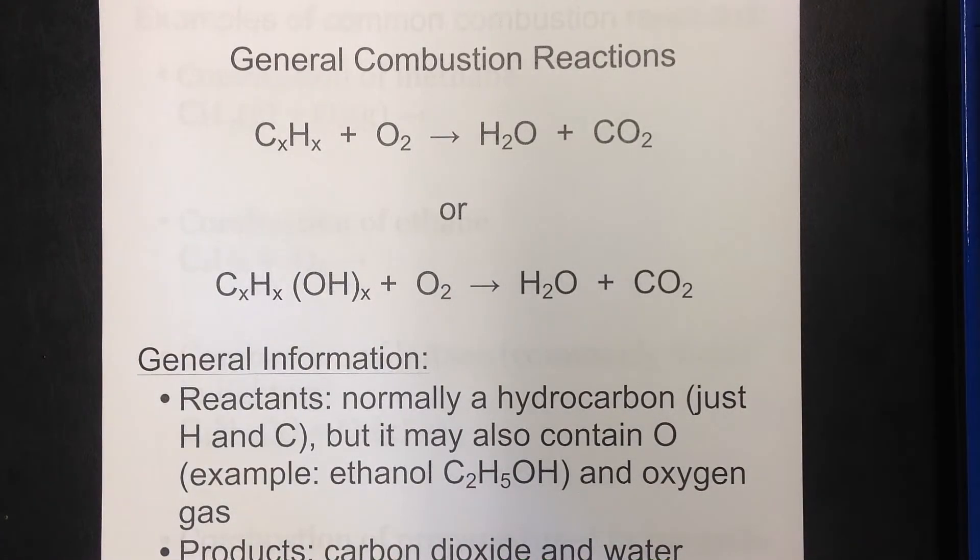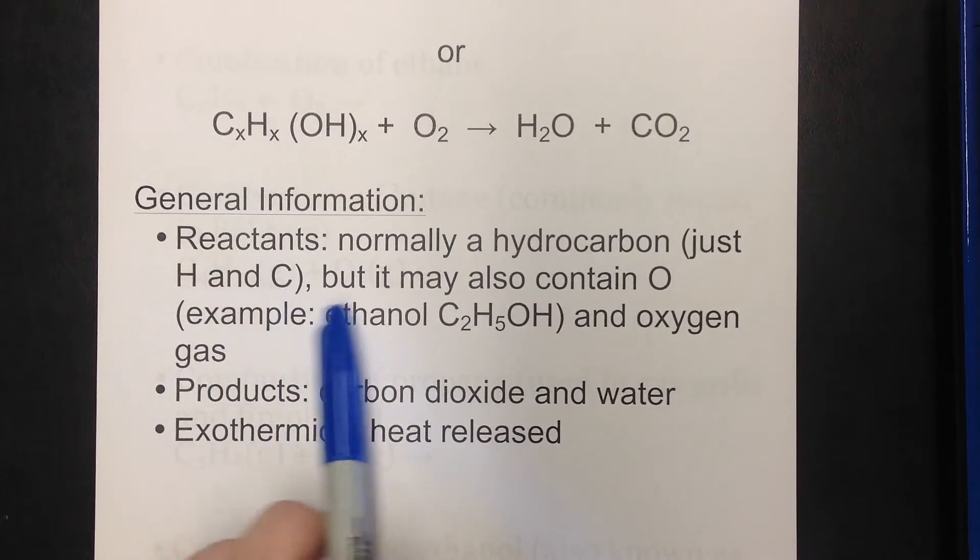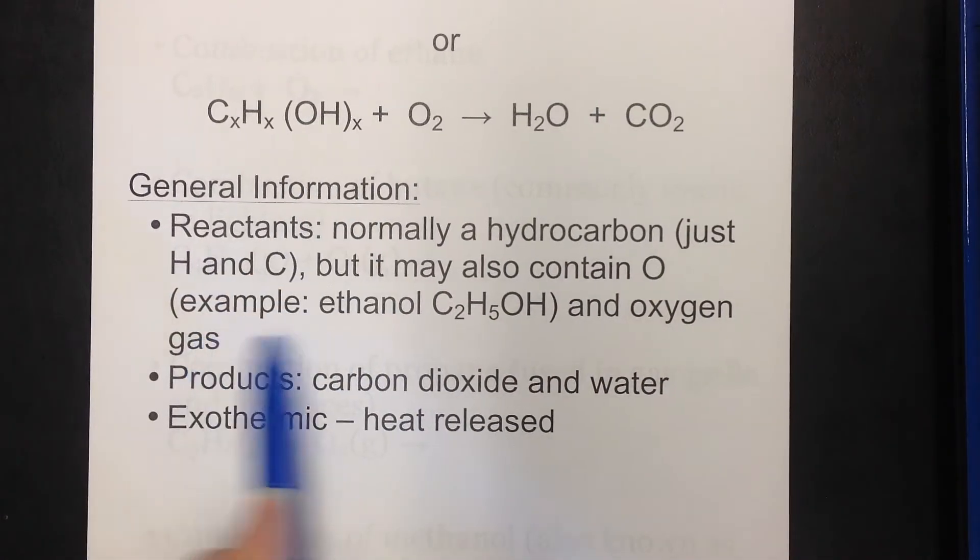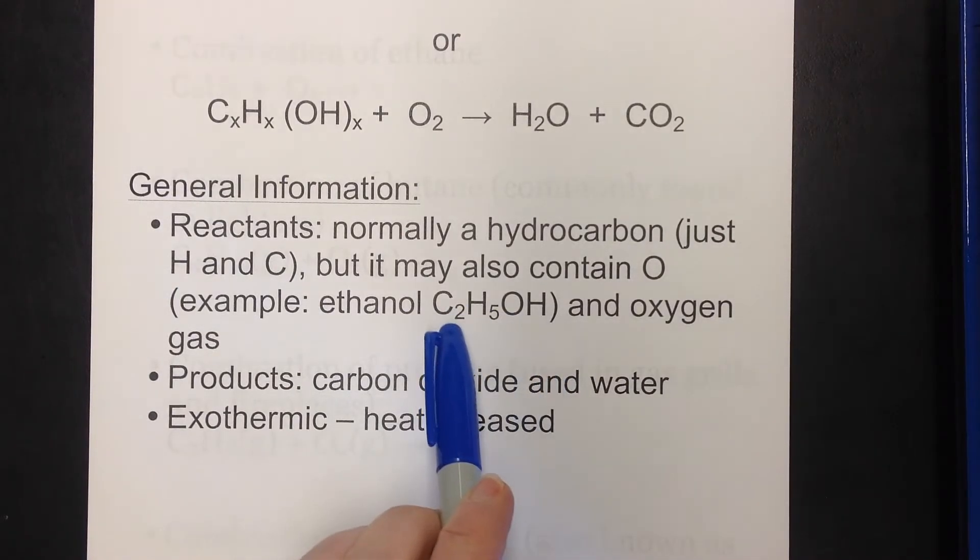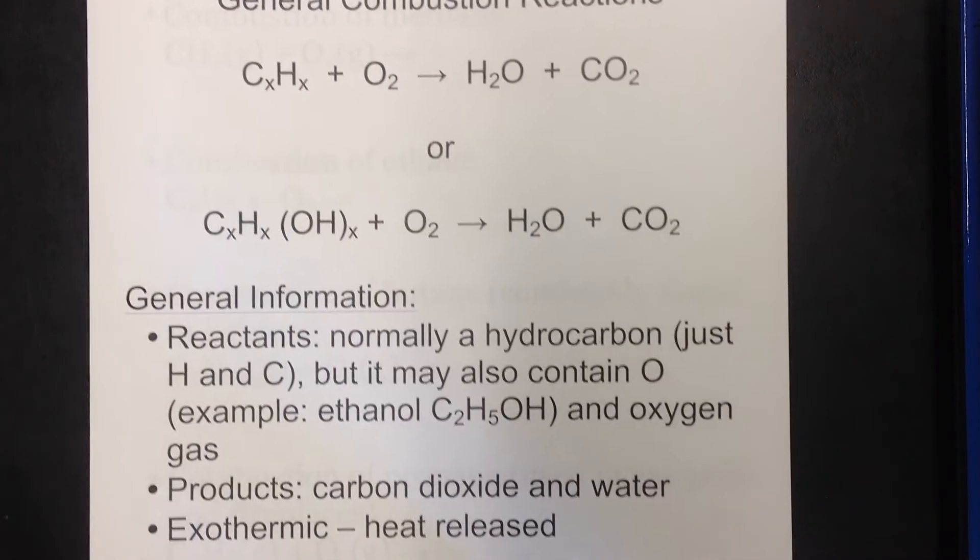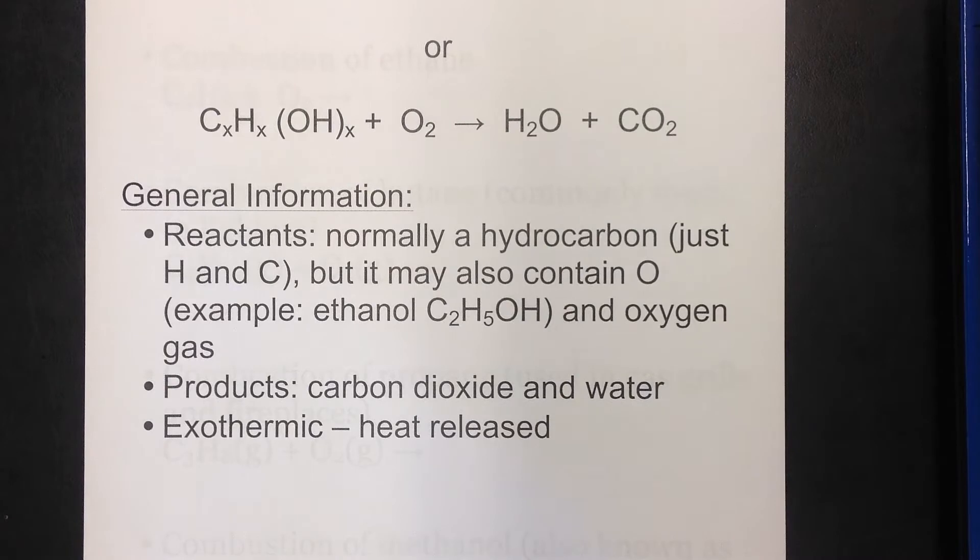So some general information about combustion reactions. The reactants are normally a hydrocarbon just hydrogen and carbon. It might contain extra oxygens. Another example would be ethanol C2H5OH, and this alcohol group is hanging onto this hydrocarbon. Also our products are always going to be carbon dioxide and water. Combustion reactions are exothermic meaning heat is released. That's probably not a surprise to anybody.